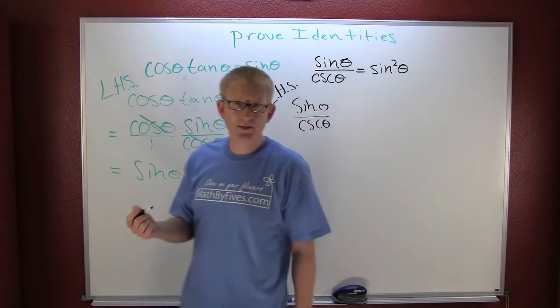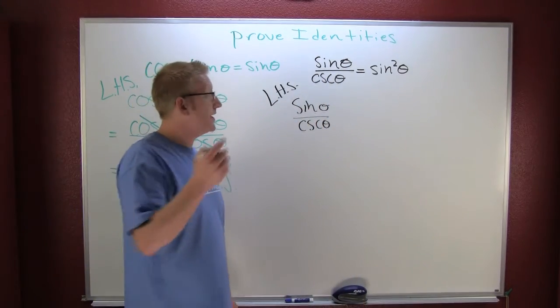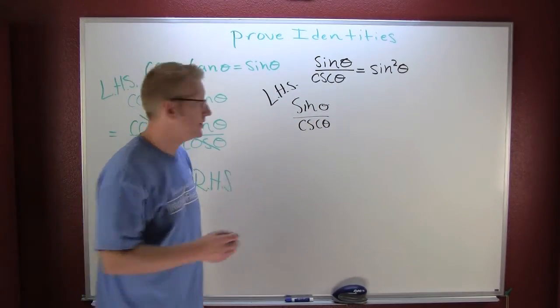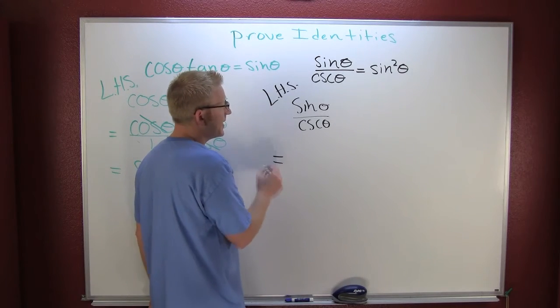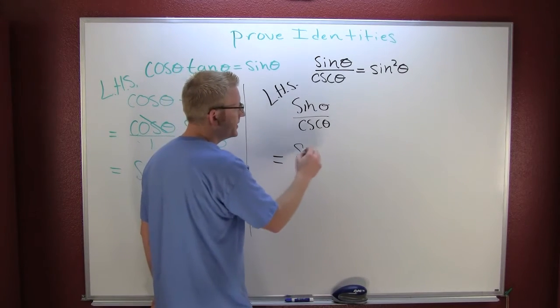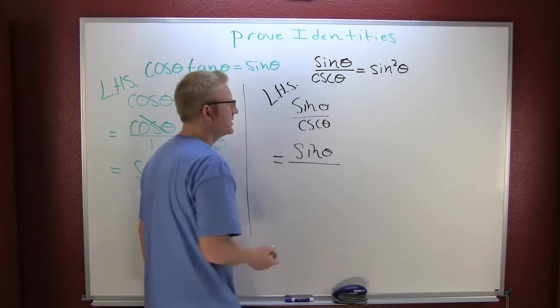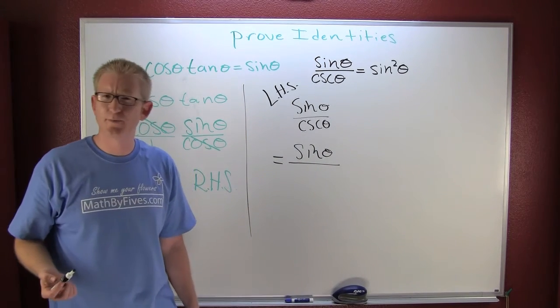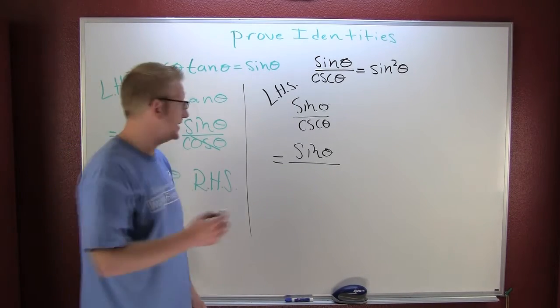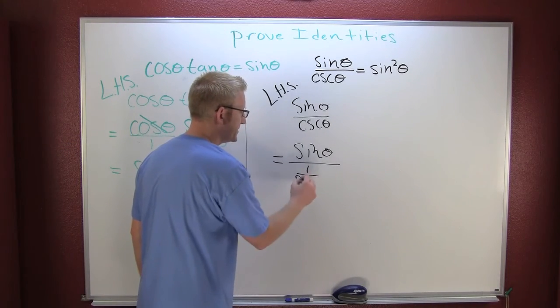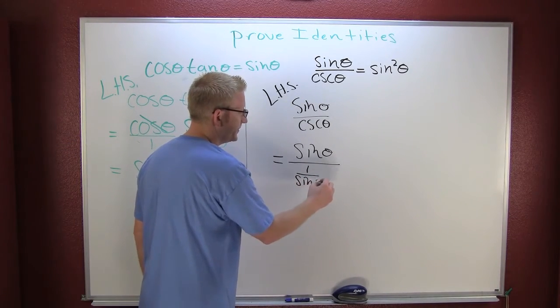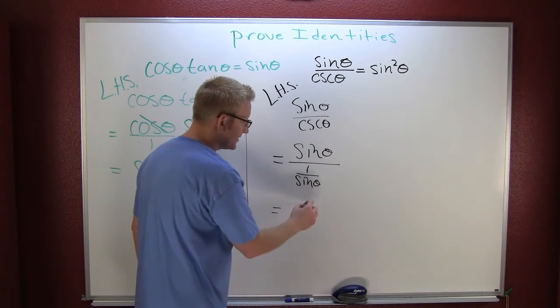I'm in a pickle. Whenever you're stuck, especially in the beginning, a good thing to do is rewrite the thing in sines and cosines. That's going to be equal to the sine of theta divided by, oh wait, the cosecant is the reciprocal identity of something. Yeah, one over the sine of theta.